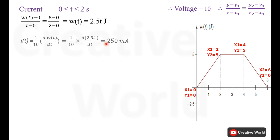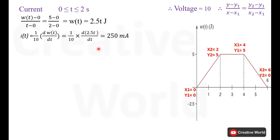Now for the calculation of current we will use this formula. The voltage is divided and the derivative of energy is taken with respect to T, and our final answer will be 250 milliamperes.